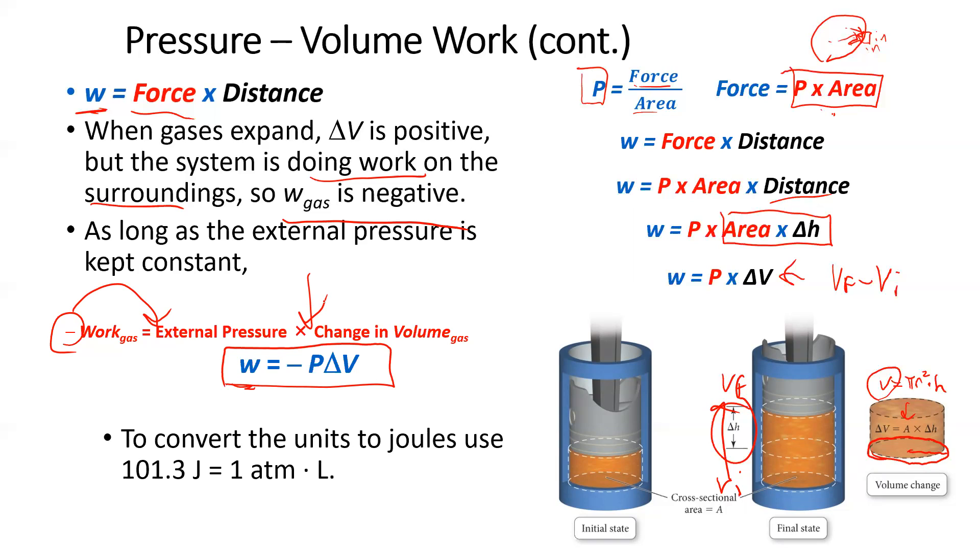Now, we also learned in gas laws, and this is why we cover gas laws before the thermochemistry, that pressure and volume is usually measured in atmosphere per liters. But we've been discussing in terms of energy, what unit we use is joules. So we need a conversion factor. And we have one. There's 101.3 joules per one atmosphere liter.